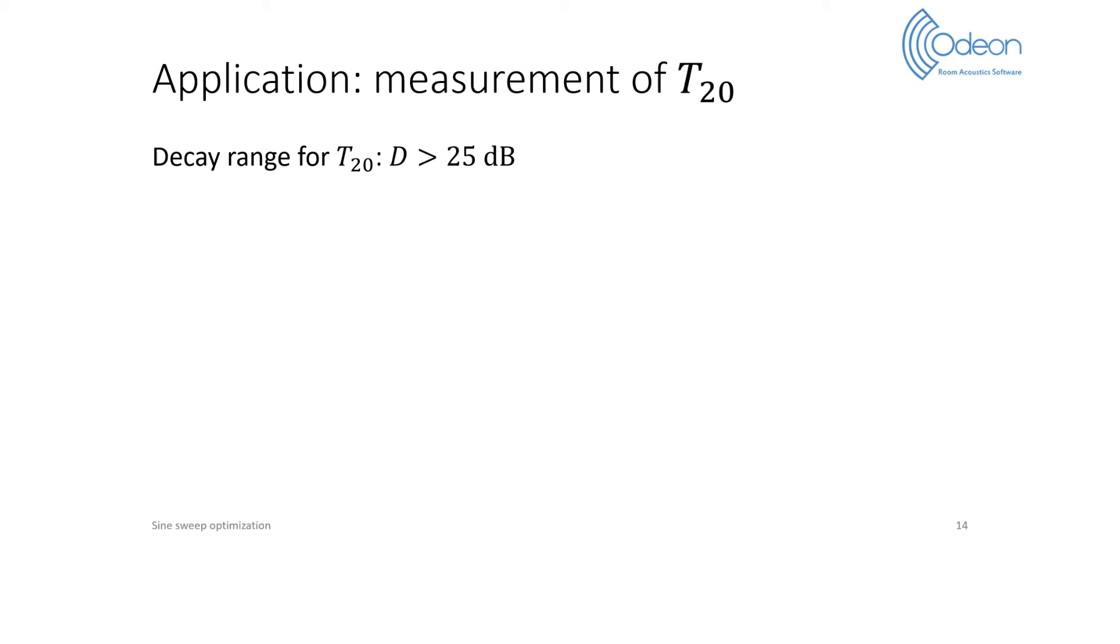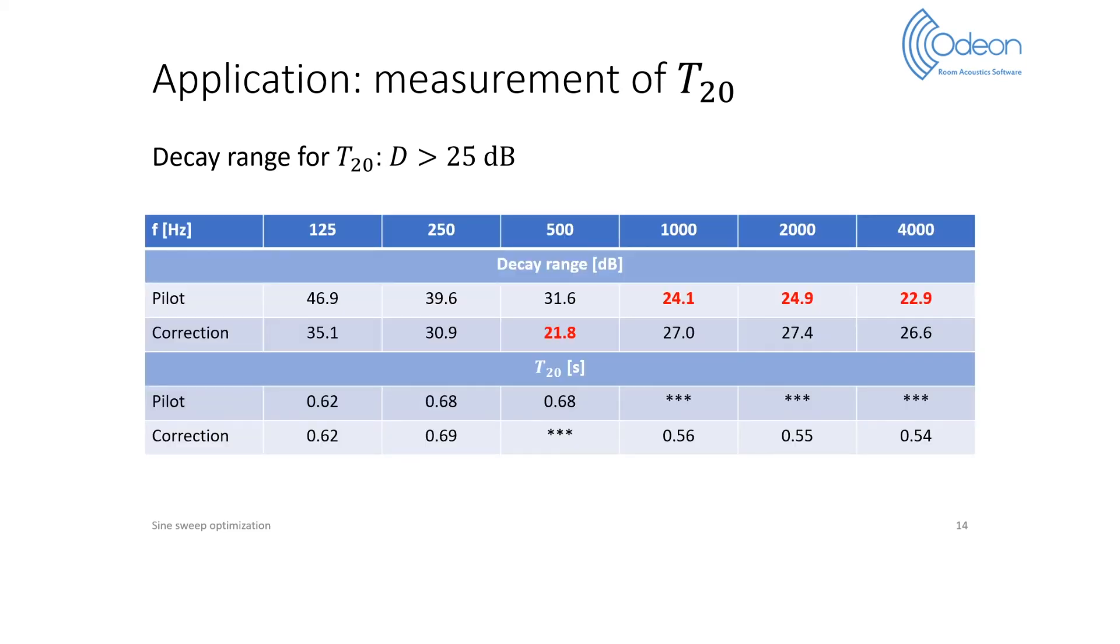In that regard, a decay range of 25 dB is enough to derive T20, instead of 35 dB in ISO 3382. Let's look at this table comparing a pilot and a corrected measurement. The pilot decay range is below 25 dB at 1 kHz, 2 kHz, and 4 kHz, so T20 cannot be derived in these bands.